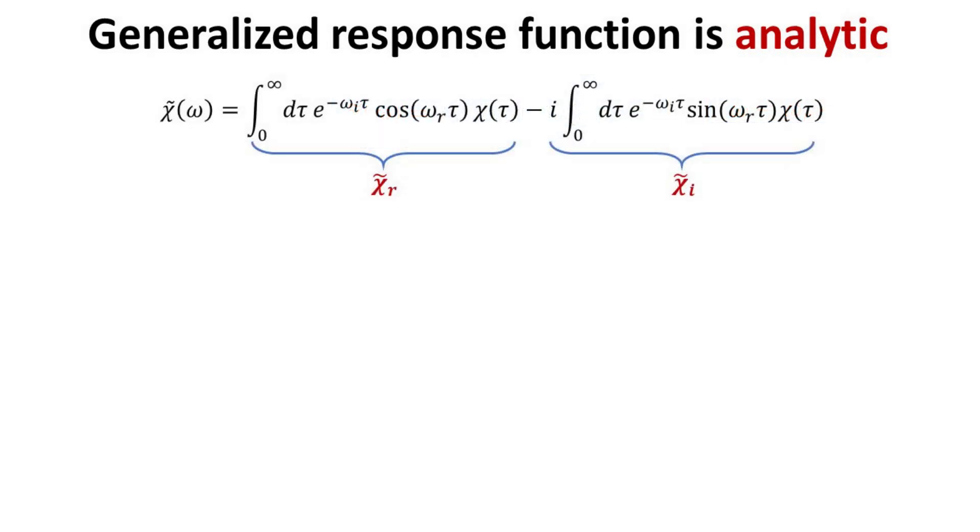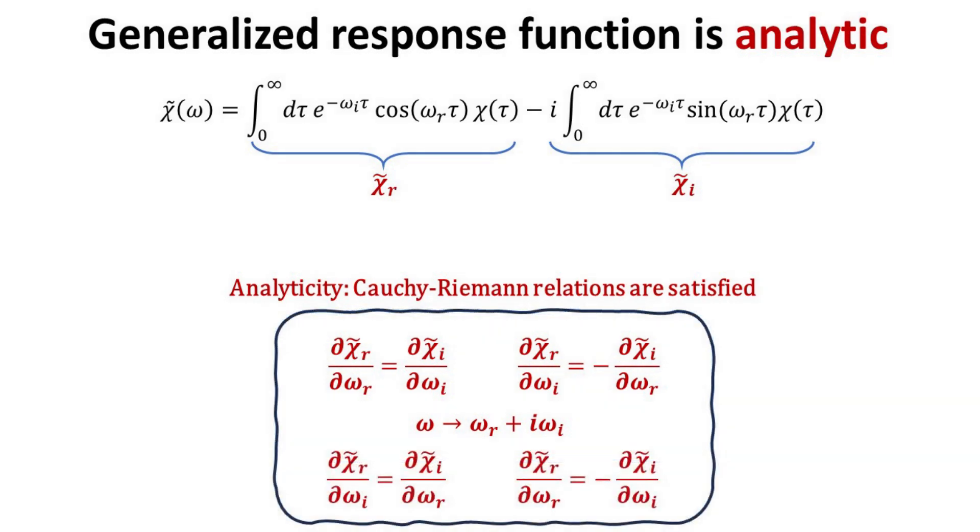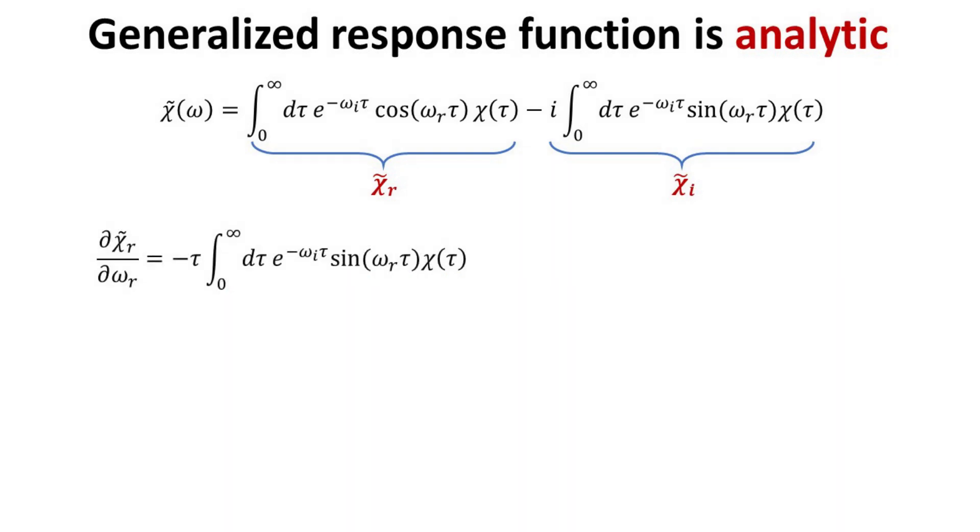Okay, so we have established that the generalized response function can be written in its real and imaginary part as follows. We want to prove that chi tilde is an analytic function over one-half of the complex omega plane. The Cauchy-Riemann relations must be satisfied for this to be true, which requires the derivative of the real and imaginary part of chi tilde with respect to omega r or omega i to satisfy the equalities as shown. Note that one can also interchange the omega i and omega r.